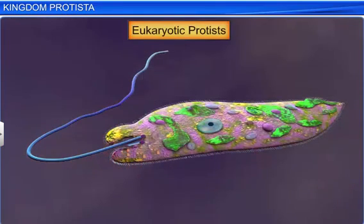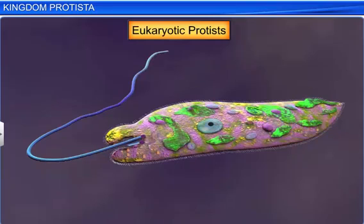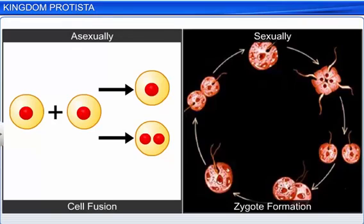Since they are all eukaryotes, they contain a well-defined nucleus and other membranous organelles. Some Protists also have either a flagellum or a cilium. They reproduce both asexually through cell fusion, and sexually via zygote formation.